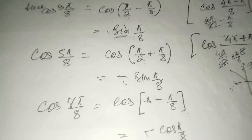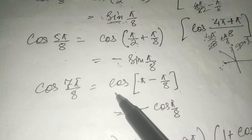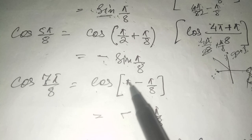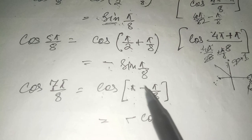Next, cos(7π/8): since 7 is less than 8 by 1, we write it as 8π/8 − π/8, which equals π − π/8. Since π is an even multiple of 90°, the ratio remains cosine. But π − π/8 is in the second quadrant where cosine is negative. Therefore cos(7π/8) equals −cos(π/8).